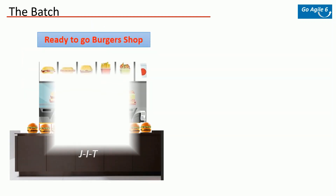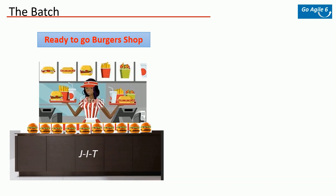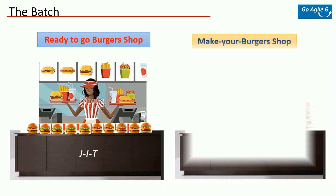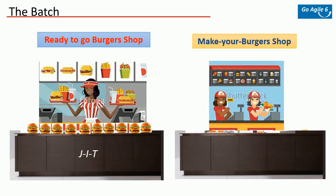Let's try to understand these principles with some examples. There are two burger shops — one is a ready-to-go burger shop and the other is a custom burger shop. In the ready-to-go shop, based on historic analysis they figured a particular type of burger is most popular. They studied that certain types of burgers are popular and also analyzed that they get lots of people at certain times, let's say 12 to 1 PM.